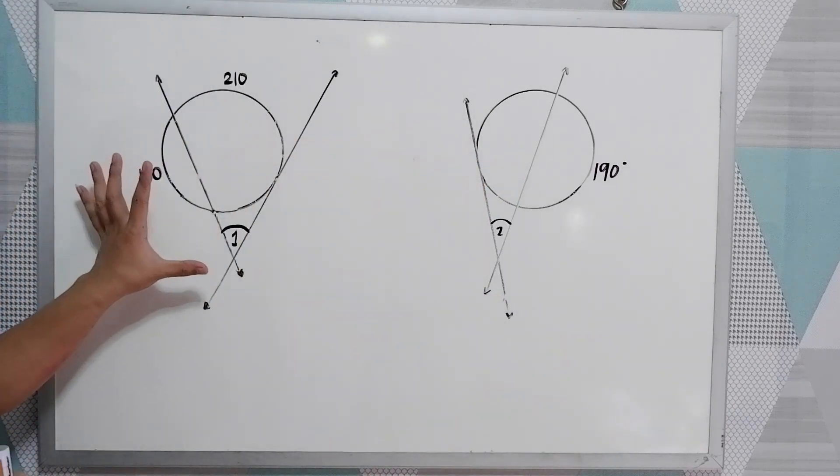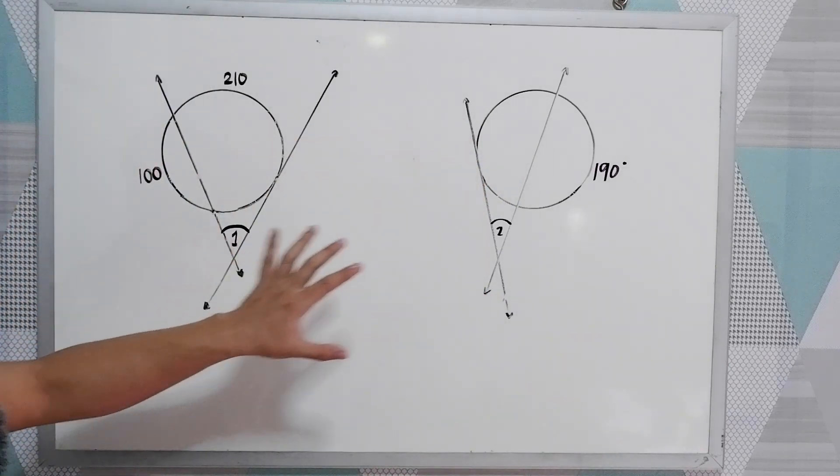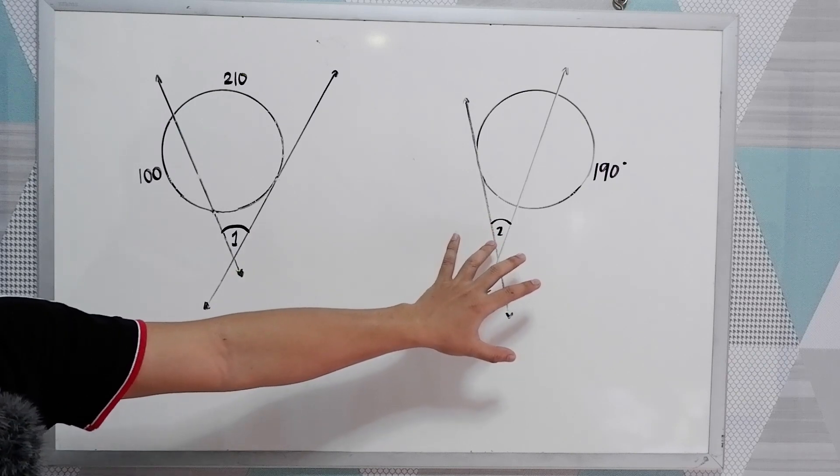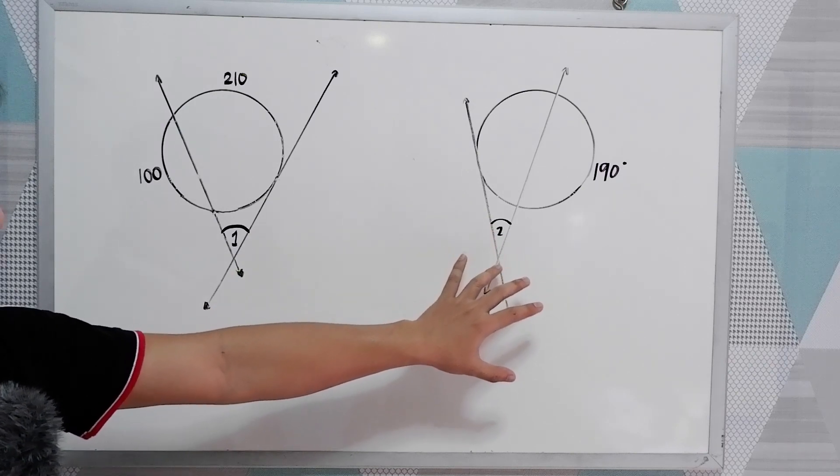So in this case, we're going to find angle 1, and in our second illustration, we're going to find angle 2.